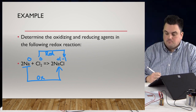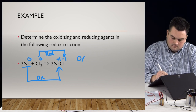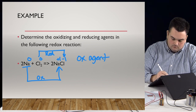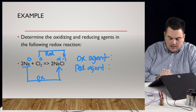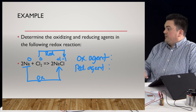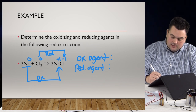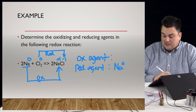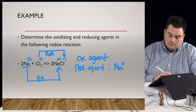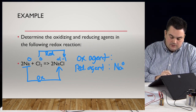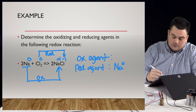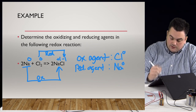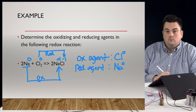Now we want to figure out the oxidizing and reducing agents. This is just the opposite, right? If Na is being oxidized, that means it must be the reducing agent. So Na⁰ is my reducing agent — not to be confused with the Na⁺ on the other side. And Cl⁰ is going to Cl⁻¹, that is being reduced, so Cl⁰ must be the oxidizing agent — not to be confused with the Cl⁻¹ on the right.